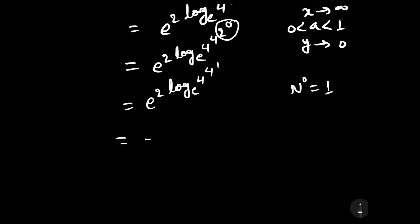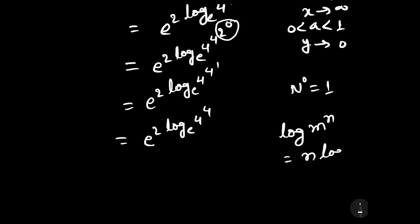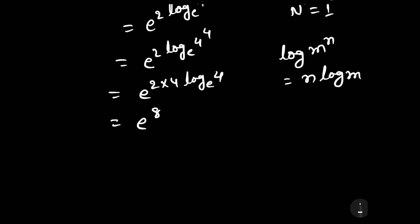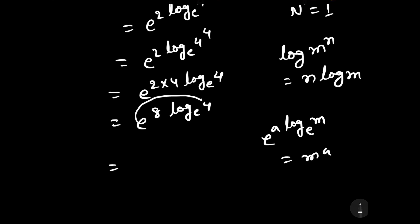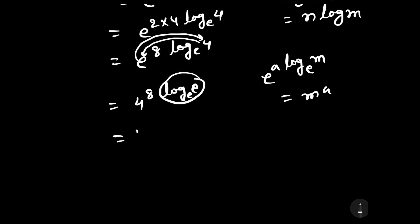The expression now becomes e to the power 2 log e base 4, to the power 4. Using the log formula log m to the power n equals n log m, this becomes e to the power 2 times 4 times log e base 4, which equals e to the power 8 log e base 4. Applying the rotation formula, e to the power a log e base m equals m to the power a, we replace to get 4 to the power 8 times log e base e. Since log e base e equals 1, this gives 4 to the power 8.